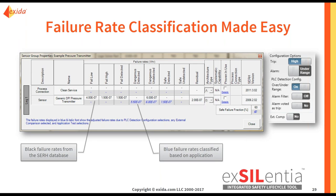Then you see the blue failure rates. These are taking the fail low, fail high, fail detected, etc., and classifying them according to how you configured your system. How does it know? On the other side, you see the configuration options. Here we selected that this would be a high trip, and that if there is an internal transmitter failure, the predefined action is to drive it under range. The PLC detection configuration is that over and under range signals are detected. We don't have any trip delay, and we say that not all alarms are voted as trip. You also see at the bottom we don't have any external comparison. This is our sample problem, showing how the failure rates are classified according to this configuration.